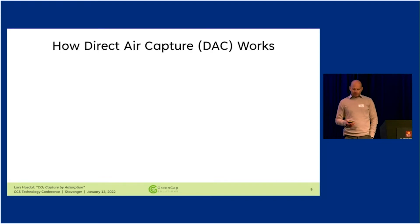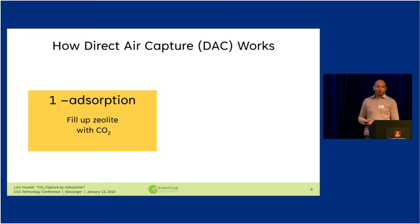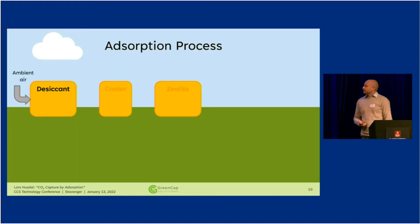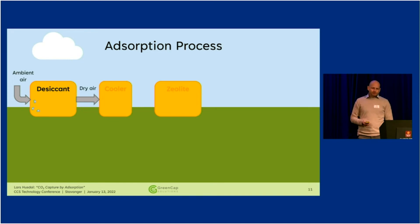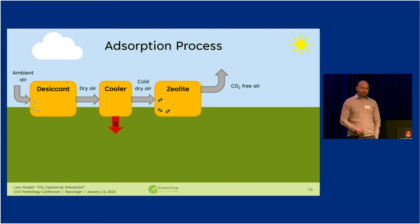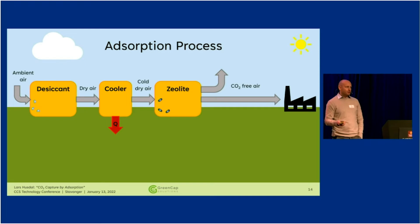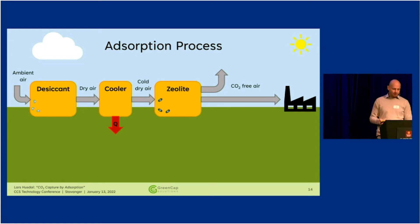Now that we know a little about zeolite properties, here is a super simplified schematic of how we can build our own little DAC unit. First, for the adsorption part — filling up the zeolite with CO2 — we start by sucking in air, pass it through a desiccant to take out the water, then add a cooler to drop the temperature and increase the zeolite's capacity. The CO2 gets trapped inside the zeolite, and we get CO2-free air out. If a customer wants CO2-free air — for instance a battery manufacturer with high air purity requirements where CO2 can damage material quality — they can actually buy our CO2-free air as well.